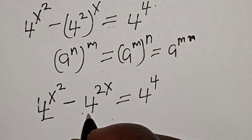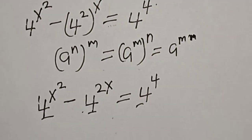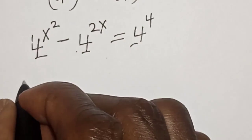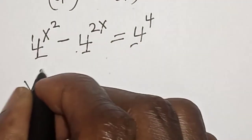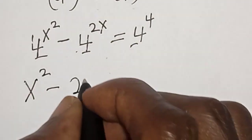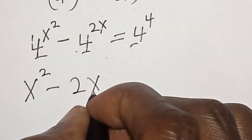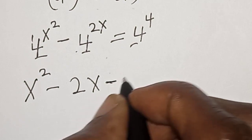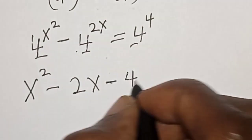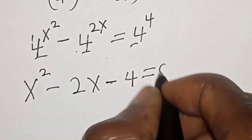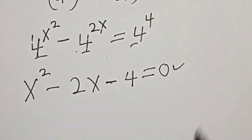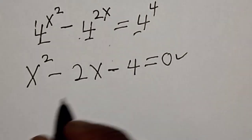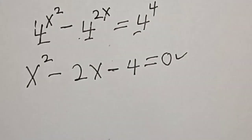We have the same base, so we equate the exponents: s squared minus 2s minus 4 equals 0. This is a quadratic equation. Now let's solve.